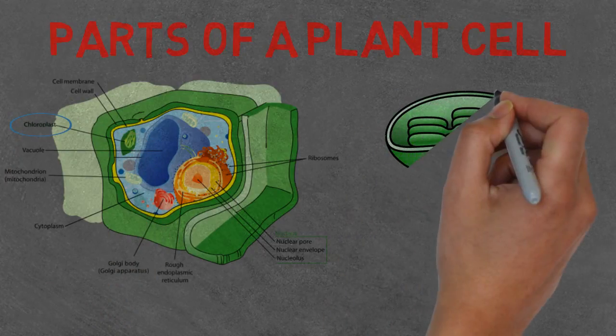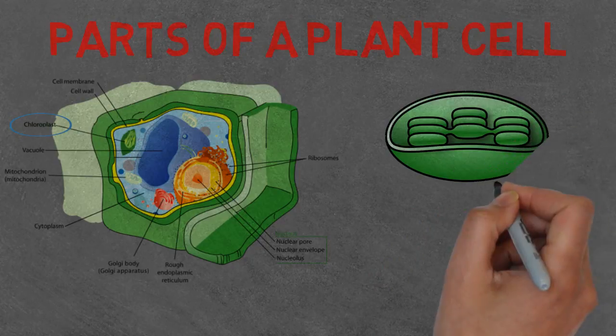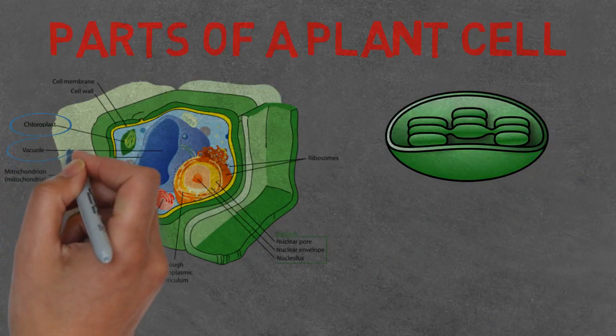First one, chloroplast. This is the site of photosynthesis. So this is how the plant gains its food.